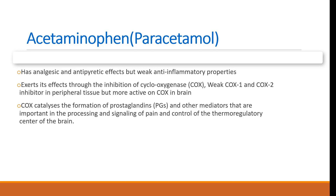Acetaminophen has analgesic and antipyretic effect but weak anti-inflammatory properties. It works through inhibition of cyclooxygenase, known as COX. It has weak COX-1 and COX-2 inhibitory function in peripheral tissue, but is more active on COX in the brain. COX catalyzes the formation of prostaglandins and other mediators important in the processing and signaling of pain and control of the thermoregulatory center of the brain. So acetaminophen will inhibit this pathway.